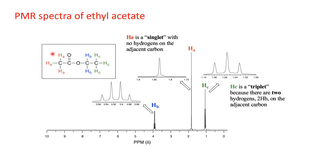Now coming to the PMR spectra of ethyl acetate. The red-colored three protons (CH₃ on the carbonyl) form one set of equivalent protons. They are attached to a carbon directly connected to the electron-attracting carbonyl group, so electron density is somewhat reduced — the PMR absorption peak will be slightly downfield. Moreover, the adjacent carbon atom has no protons, so there is no splitting and you get a single peak (singlet) for this set.